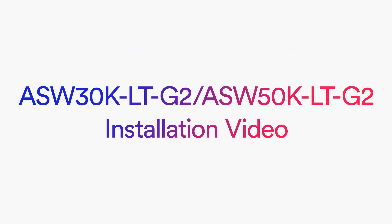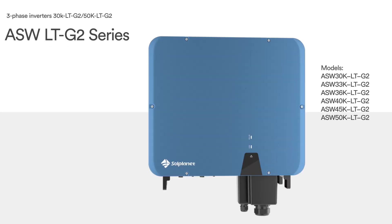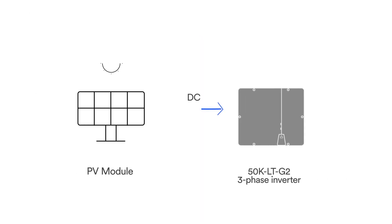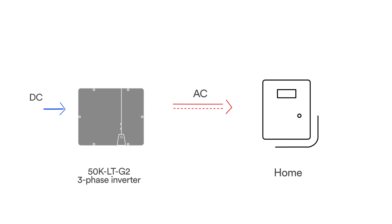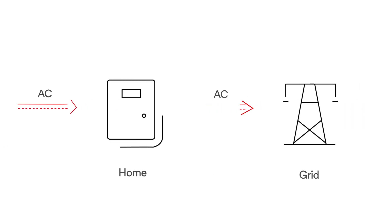SolPlanet 30K to 50K LT-G2 series inverter is a three-phase transformerless string inverter with three to five independent MPPTs. It converts the direct current DC generated by the photovoltaic PV module into three-phase alternating current AC and feeds it into the utility grid.